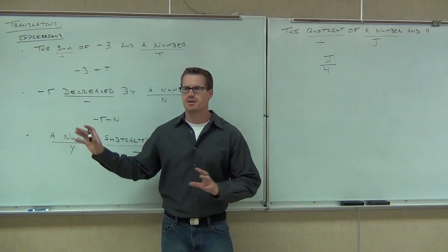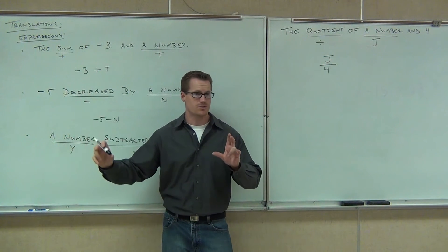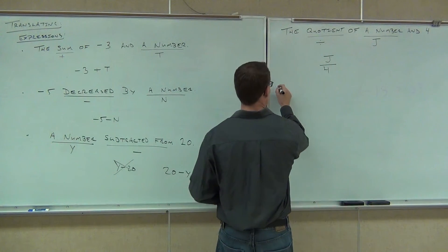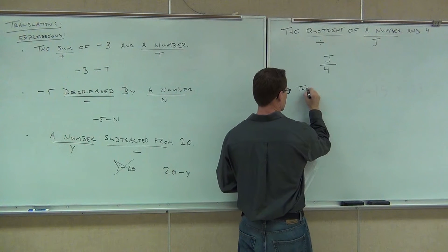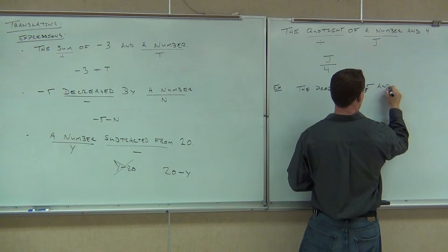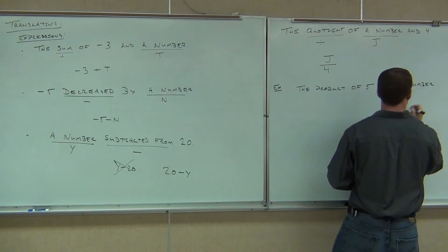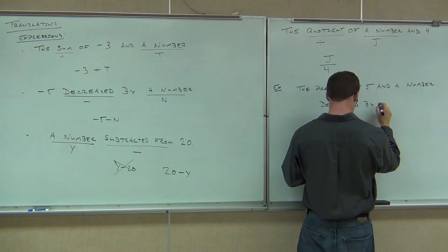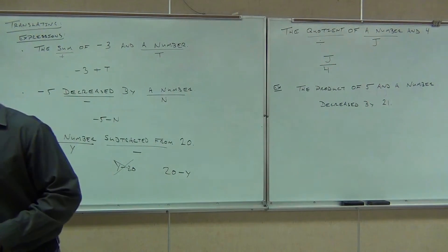Now, do you feel all right with these examples I've given you? We're going to step it up a little bit. These are just pretty much two things either connected by distance, direction, or between age and division. We're going to step it up, ramp this up, and see if we can make something a little bit more complex. The product of five and a number decreased by 21.